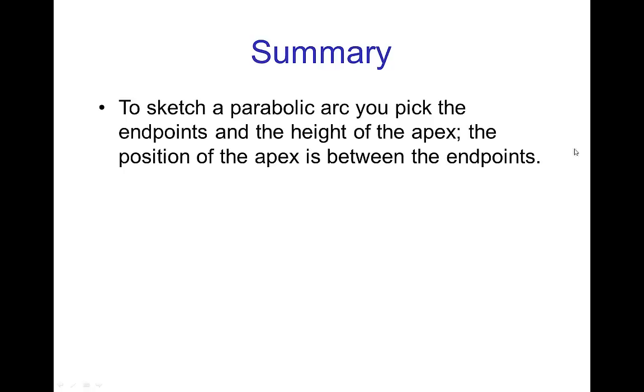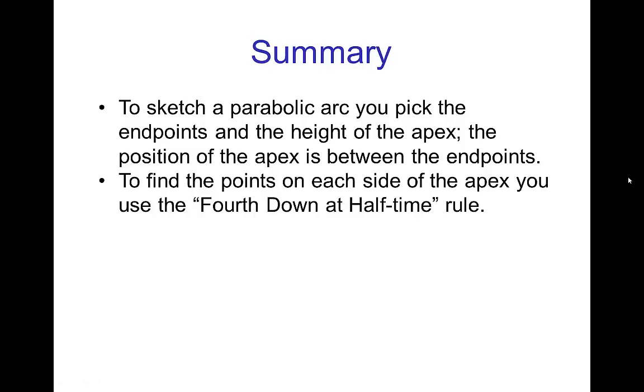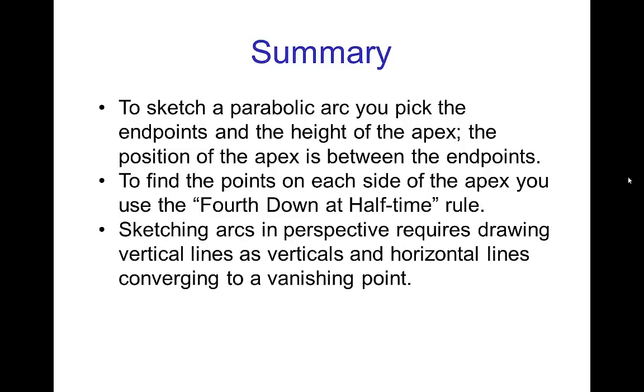So in summary, to sketch a parabolic arc, you pick the starting and ending points, and you pick the height that you want the apex. Then the position of the apex is between those two endpoints. To find the points on each side of the apex, you use the fourth down at half time rule. And then sketching arcs in perspective, you just have to remember that vertical lines are drawn as verticals, however horizontal lines have to converge to a vanishing point.